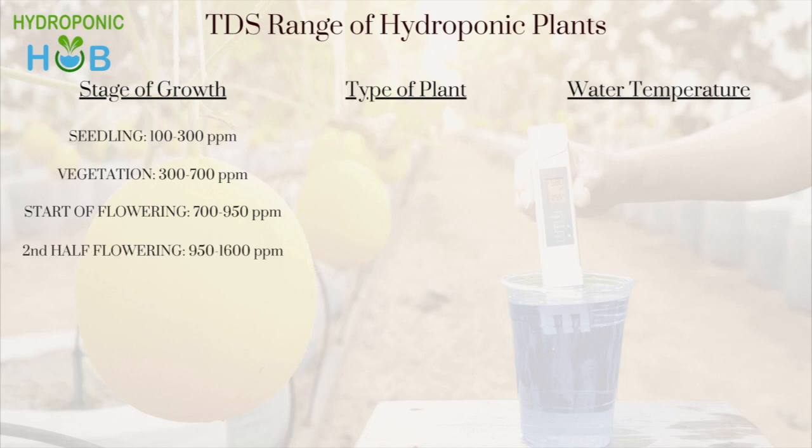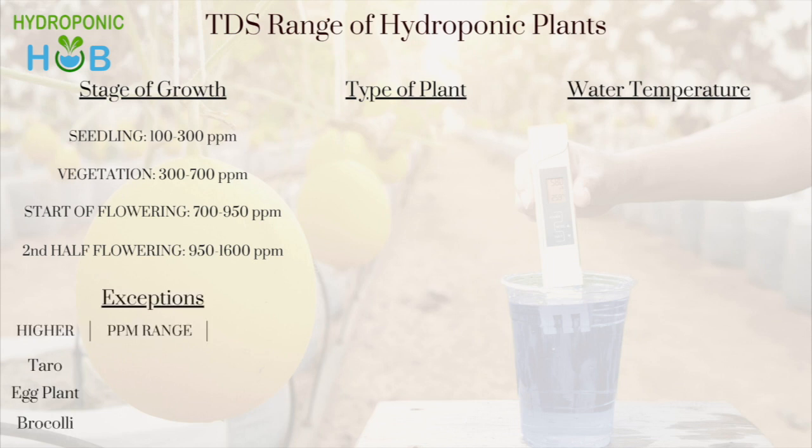At the first half of the flowering stage, the plant requires 700 to 950 ppm, and at the second half it requires 950 to 1600 ppm, because the plant's fruits take up the maximum amount of nutrients. When harvest time comes, the tank should be emptied and fresh nutrients poured in. These ppm readings are standard for most plants but may differ slightly for plants such as taro, eggplant, and broccoli, which require higher ppm levels.